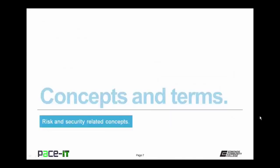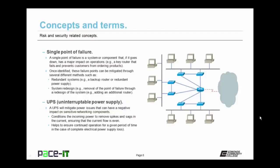Now let's talk about some concepts and terms. First up is Single Point of Failure. A single point of failure is a system or component that, if it goes down, has a major impact on operations. An example is if a key router goes down and it prevents customers from ordering products — that's a single point of failure. Once identified, these failure points can be mitigated through several methods, such as redundant systems — like adding a backup router — or a redundant power supply. Single points of failure can also be mitigated through system redesign, removing that point of failure entirely.